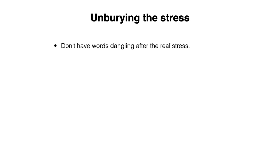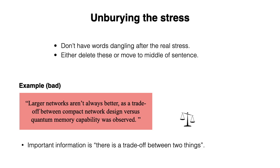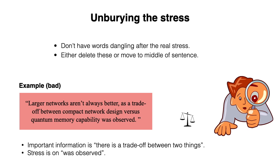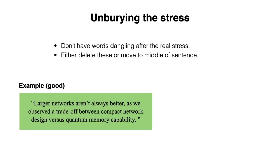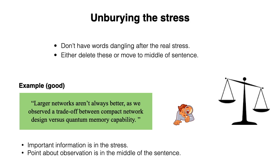Finally, what we need to do is make sure that we haven't buried the stress. We don't want to have words dangling after the real stress, so either delete these or move them to the middle of the sentence. Here is an example: "Larger networks aren't always better, as a trade-off between compact network design versus quantum memory capability was observed." The important information is that there is a trade-off between compact network design and quantum memory capability, but the stress is placed on "was observed." So we fix this as follows: "Larger networks aren't always better, as we observed a trade-off between compact network design versus quantum memory capability." Here, the important information is in the stress, and the point about observation is in the middle of the sentence.